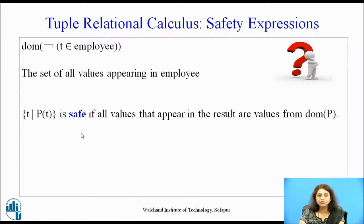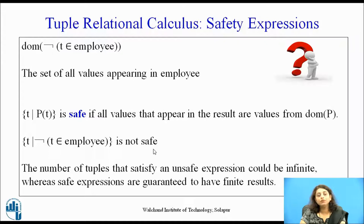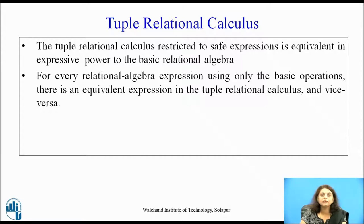An expression is called safe if all values appearing in the result come only from the domain. The negation expression producing infinite results is therefore not safe. The number of tuples satisfying an unsafe expression could be infinite. In tuple relational calculus we write only safe expressions. Tuple relational calculus restricted to safe expressions is equivalent to relational algebra using only the basic operations — not extended ones like generalized projection or aggregation. Every relational algebra expression using basic operations can be converted to TRC and vice versa.